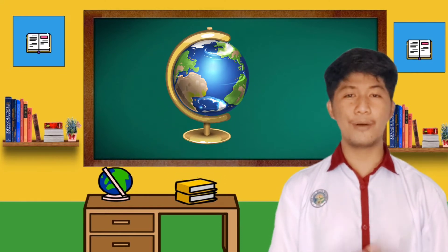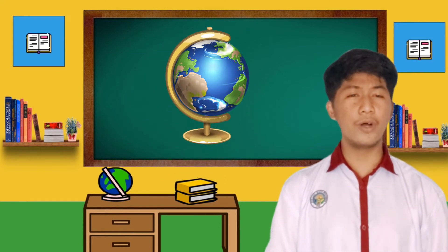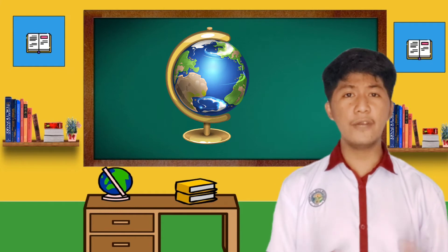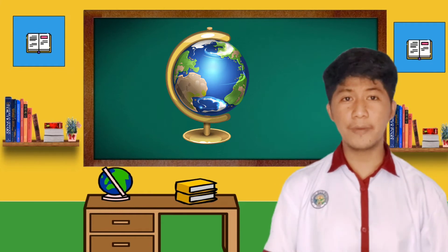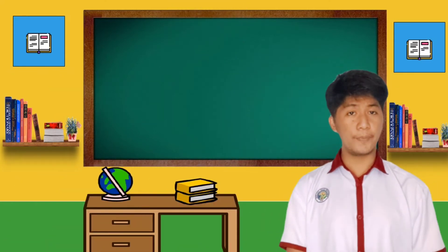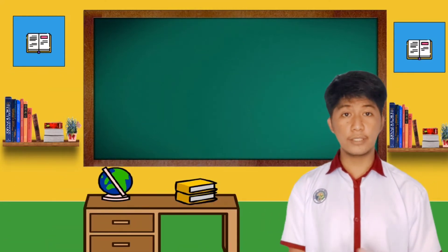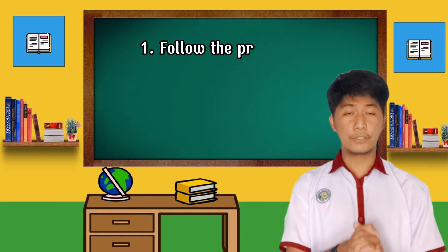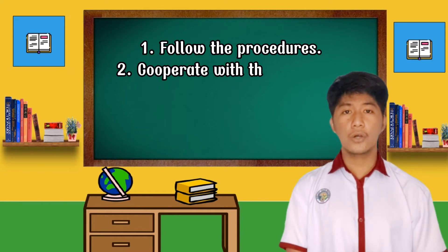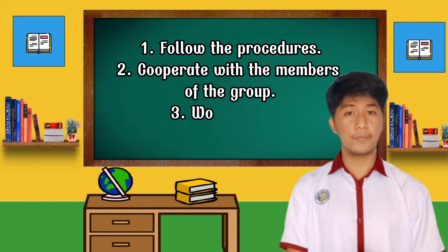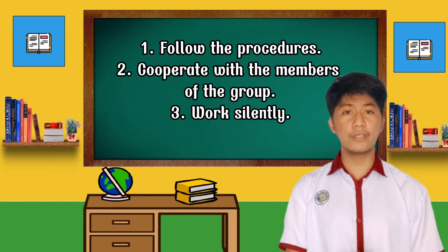Now that we know something about the sources of water, today we are going to find out the uses of water, and for you to know that, we are going to have our group activity. Before we proceed in our group activity, you have to follow these instructions. First, follow the procedures. Second, cooperate with the members of the group. And last, and the most important thing, is work silently.